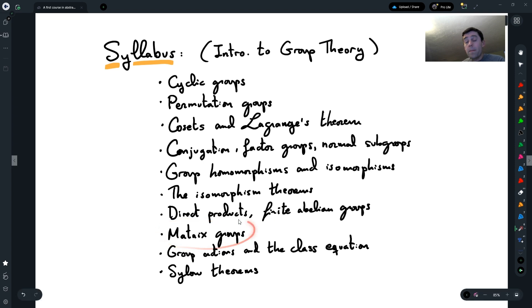We will talk about matrix groups. And then finally, at the end, we will talk about some very important topics in group theory, which is group actions. Out of group actions, we will prove what's called the class equation. And then we will end the course with the Sylow theorems and applications of the Sylow theorems.